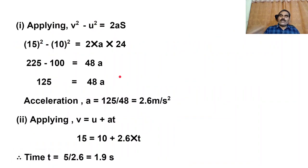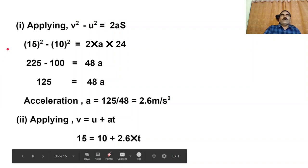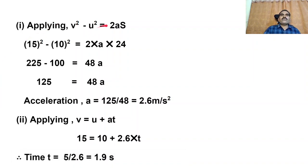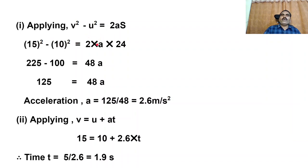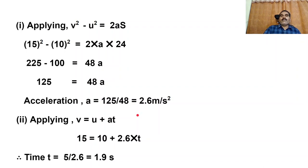To find out the acceleration, apply the equation V square minus U square equals 2AS. V is 15 m/s, U is 10 m/s, S is 24 m. So 15 square minus 10 square equals 2 into A into 24. That gives 225 minus 100 equals 48A. So 125 equals 48A. Therefore acceleration A equals 125 by 48 equals 2.6 meters per second square.